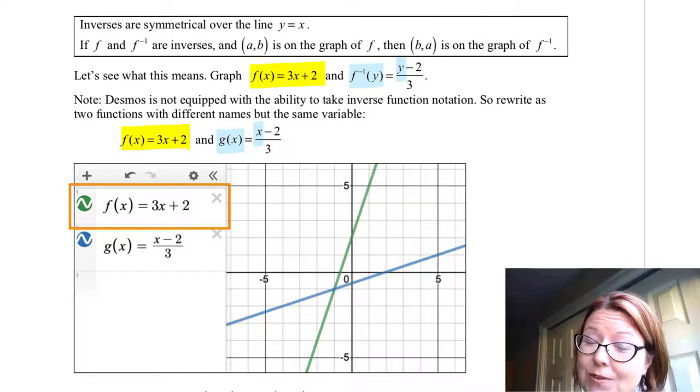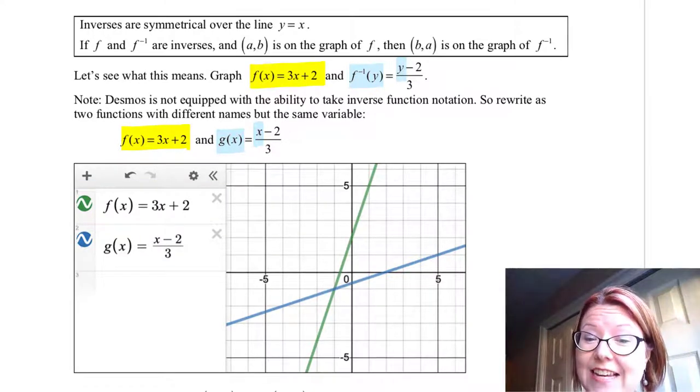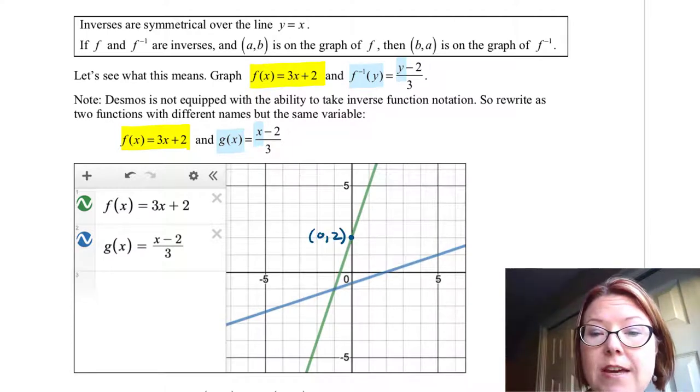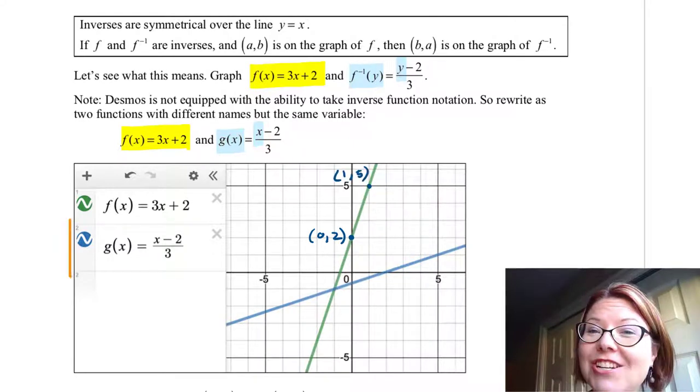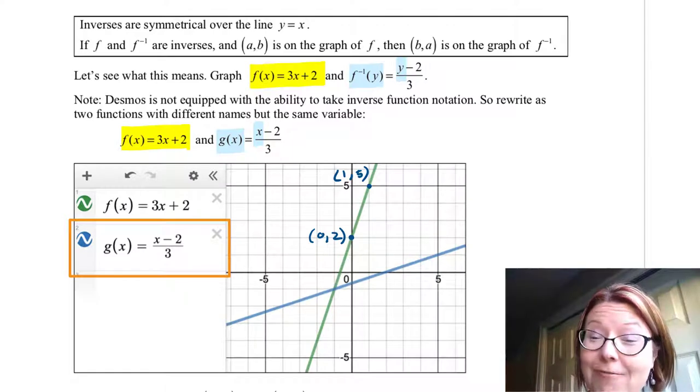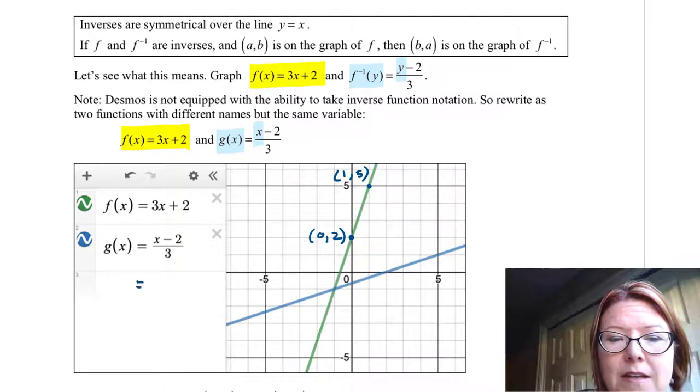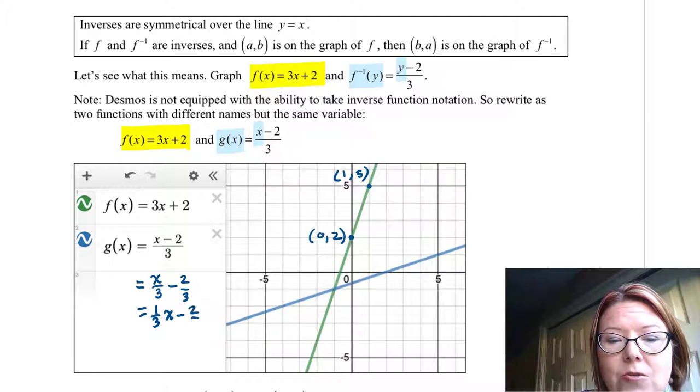f(x) = 3x + 2 is a line that is increasing. It has a y-intercept of (0, 2) and a slope of 3, which means that another point on this graph is (1, 5). g(x) equals a fraction with (x - 2) all over 3 is another line. I'm going to rewrite this slightly to be x/3 - 2/3, or (1/3)x - 2/3.